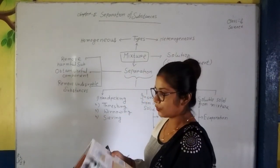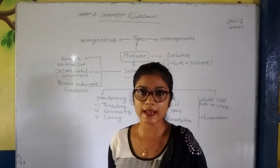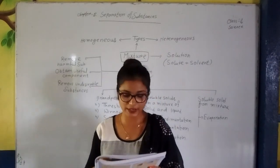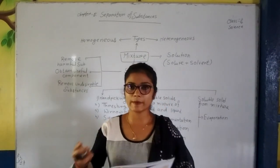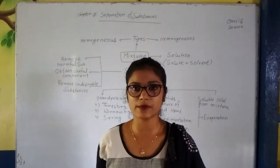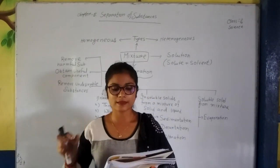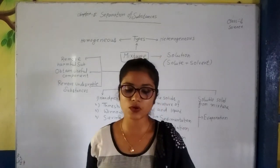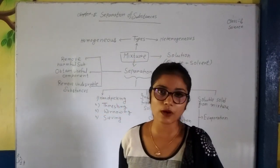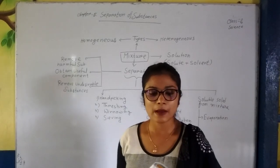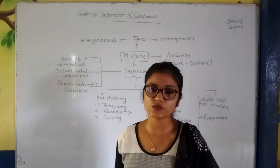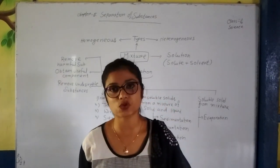The next process is winnowing. Winnowing means separating the heavier and lighter components of a mixture by blowing or throwing. For example, a farmer separating the husk from the wheat grain — that process is known as winnowing. The fourth process is sieving. Sieving means separating the components of a mixture of different sizes by using a sieve, such as at a building construction site to separate stones.